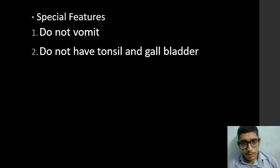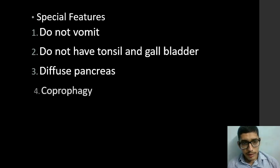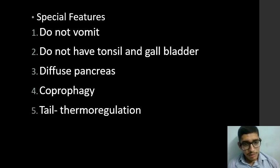The special features of rats are as follows. First, they do not vomit. Second, they do not have tonsils or gallbladders. Third, they have a diffuse pancreas. Fourth, coprophagy — that is, the rat can eat its own fecal material to survive. Fifth, tail thermal regulation — the animal regulates its body temperature through its tail.